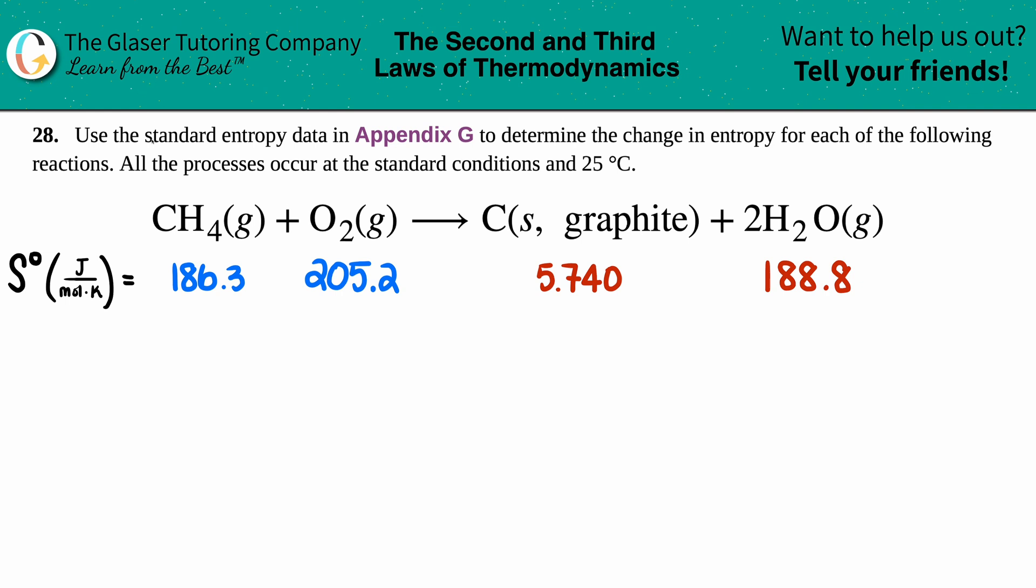Number 28. Use the standard entropy data in Appendix G to determine the change in entropy for each of the following reactions. All the processes occur at the standard conditions and at 25 degrees Celsius. Okay, cool. So in this case, we have CH4 gas plus O2 gas yields C solid, the graphite version, plus 2H2O gas.